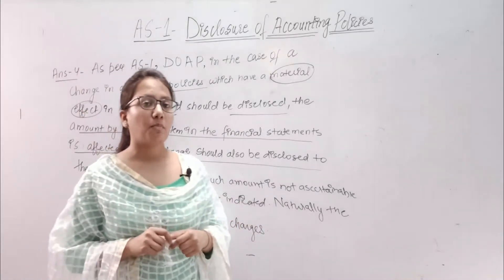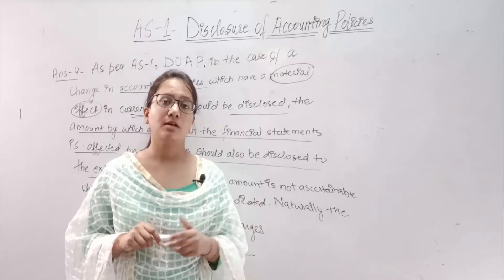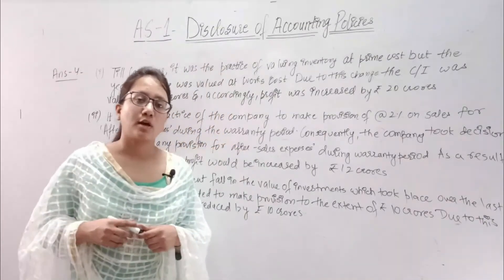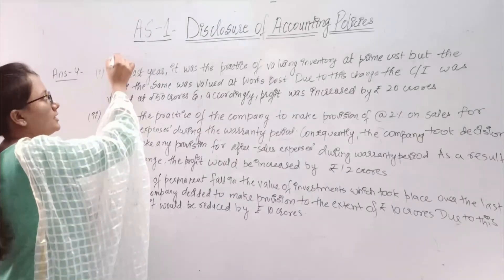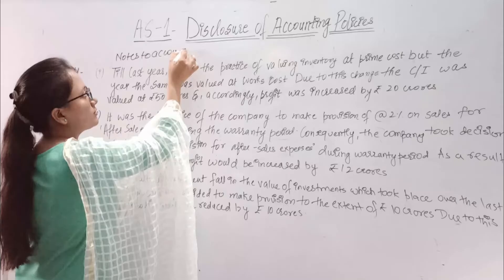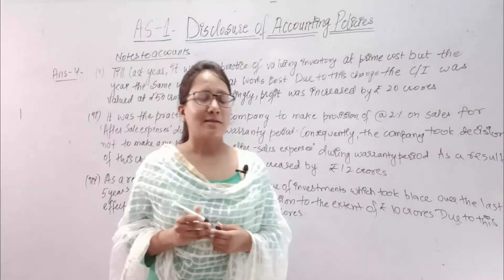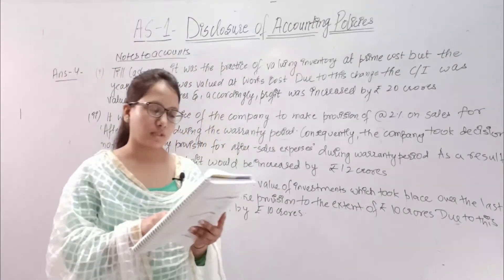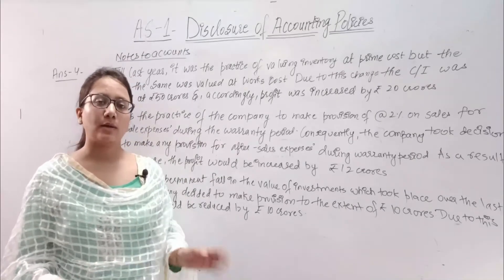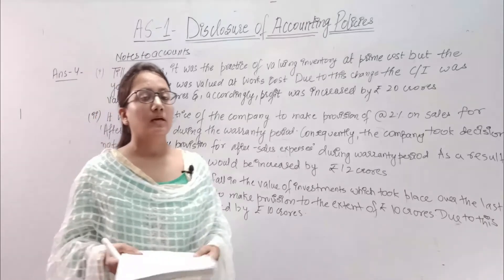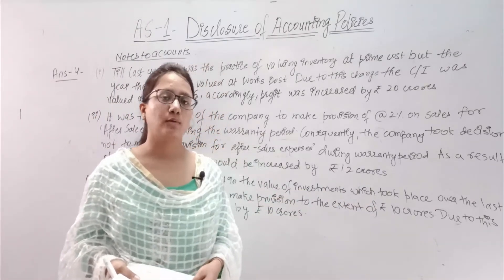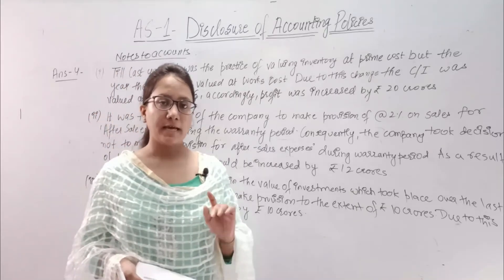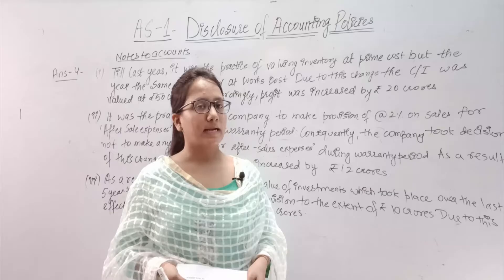Now let's write the notes to accounts. There were three changes in accounting policy, so we have to do three disclosures in the books. For the first point: what did we do first? Inventory valuation on the basis of prime cost. So what was the old policy? Prime cost. What is the new policy? Valuation on work cost, that is, on factory cost. Because of the old policy, there was 30 crore valuation, and the new policy gives 50 crore valuation. We all know that if the closing stock is increased, our current year profit will increase. There are four things to mention, and the fourth one — the reason of change — the managing director has not written a reason. So we have not written a reason. We have written: till last year, it was practice of valuing inventory at prime cost. During the current year, the same was valued at work cost.